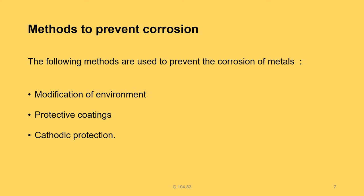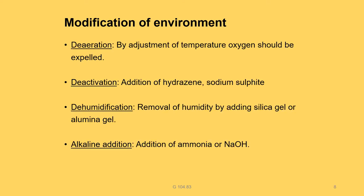Next topic: methods to prevent corrosion. Some methods used to prevent corrosion of metals are: modification of environment, protective coatings, and cathodic protection.